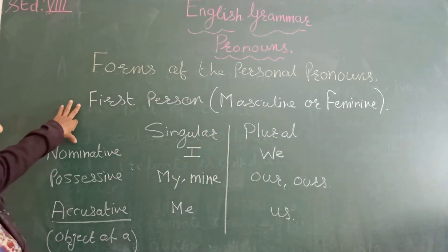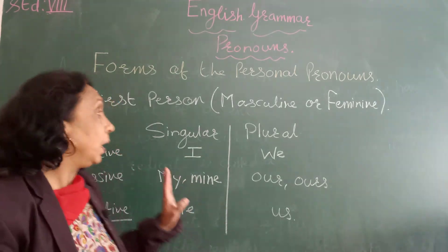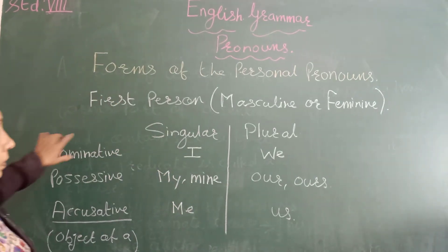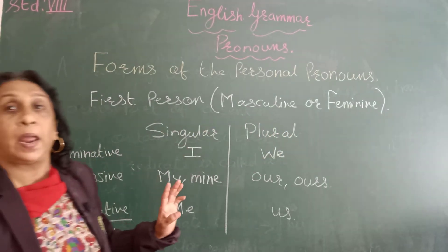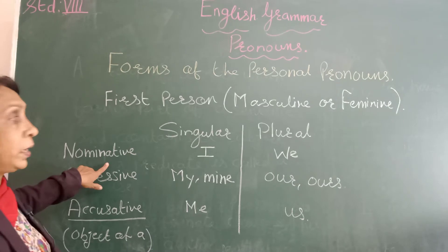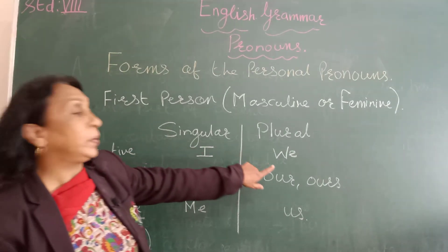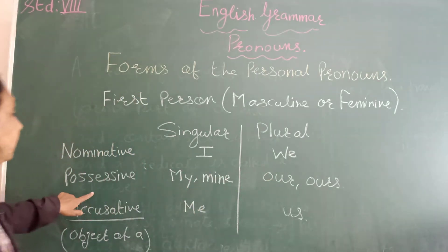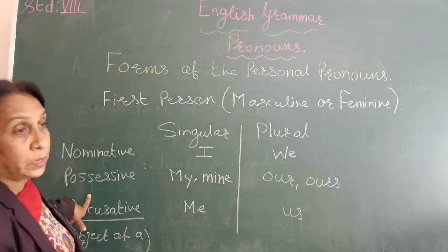In personal pronouns, the first person means the person who is speaking. Now look here — this is the nominative case, singular and plural. Singular means one person and plural means more than one. In the nominative case, for singular we use 'I' and for plural we use 'we'.